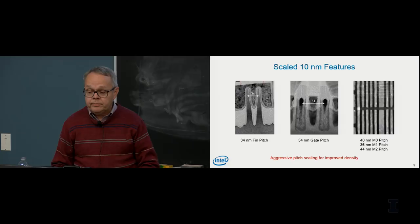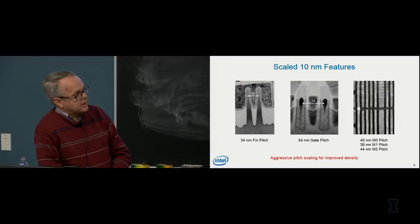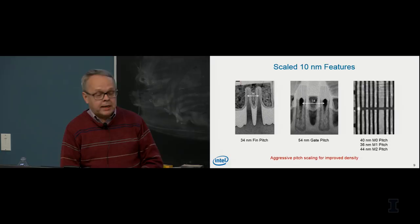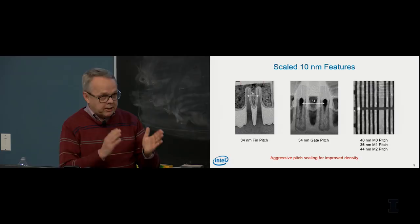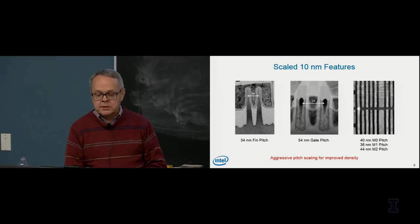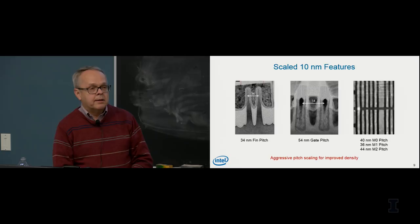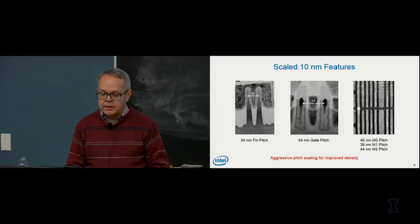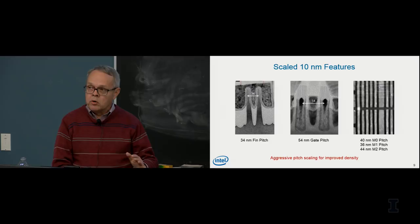Here are actual micrographs of devices on our 10 nanometer technology. On the left you can see the silicon fins for the FinFET transistors scaled to a 34 nanometer pitch. In the center are the transistor gates with source-drain regions, with gate pitch scaled down to 54 nanometers. On the right is one of the many interconnect layers — the three lowest layers, metal zero, metal one, and metal two, have minimum pitches of 40, 36, and 44 nanometers respectively.